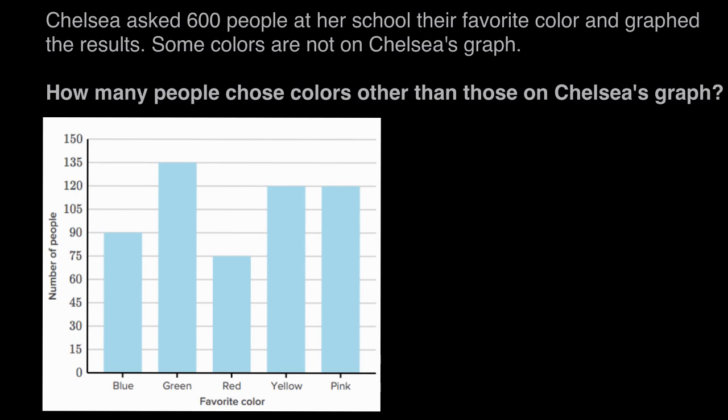Chelsea asked 600 people at her school their favorite color and graphed the results. Some colors are not on Chelsea's graph. How many people chose colors other than those on Chelsea's graph?